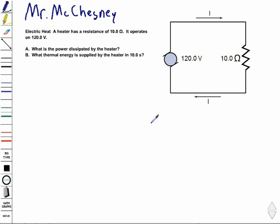So we have a heater that has a resistance of 10.0 ohms. It operates on 120.0 volts. One of the first things we're going to do is draw the situation, because the question's asking us what's the power dissipated by the heater and what thermal energy is supplied by the heater in 10 seconds. So those are the questions we're going to try and answer.